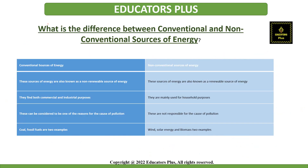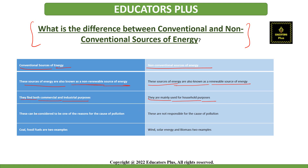Now let's discuss the difference between conventional and non-conventional sources of energy. Conventional sources are also known as non-renewable sources, whereas non-conventional sources are also known as renewable sources. Conventional sources serve both commercial and industrial purposes, whereas non-conventional sources are mainly used for household purposes. Conventional sources can be considered causes of pollution, whereas non-conventional sources do not cause pollution. Examples of conventional sources are coal and fossil fuels; examples of non-conventional sources are wind, solar energy, and biomass.